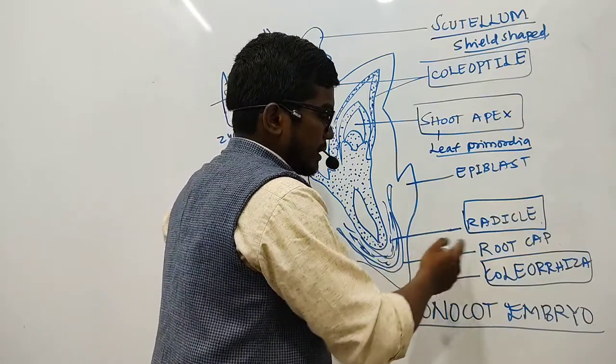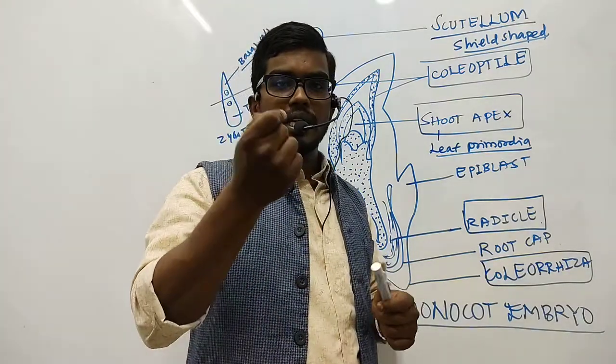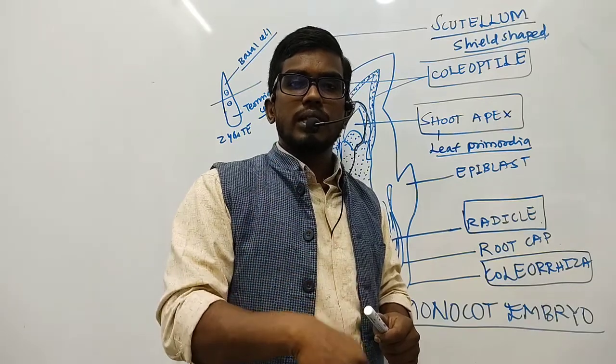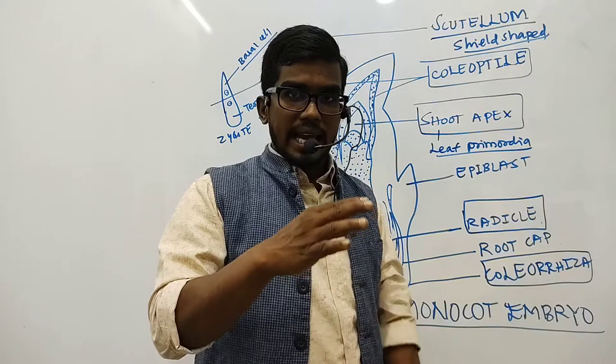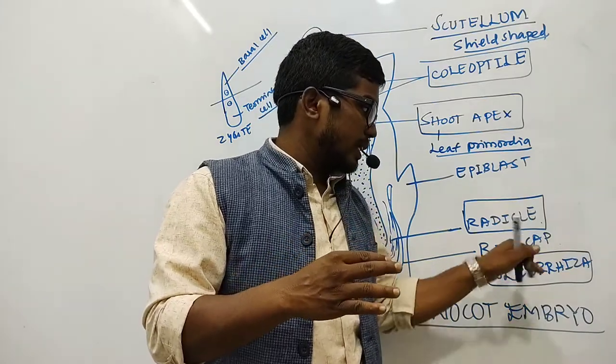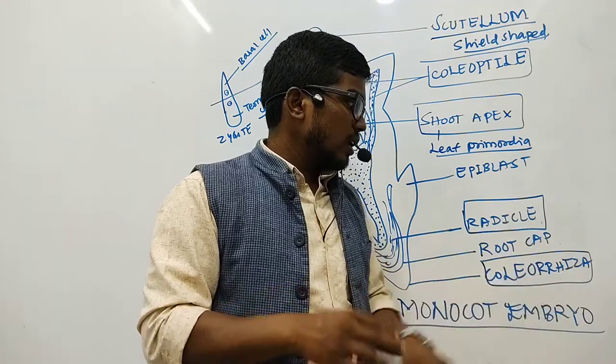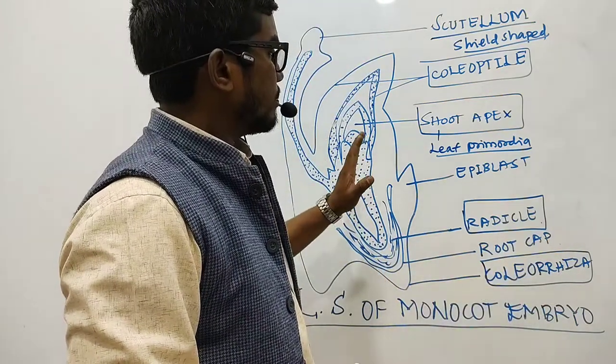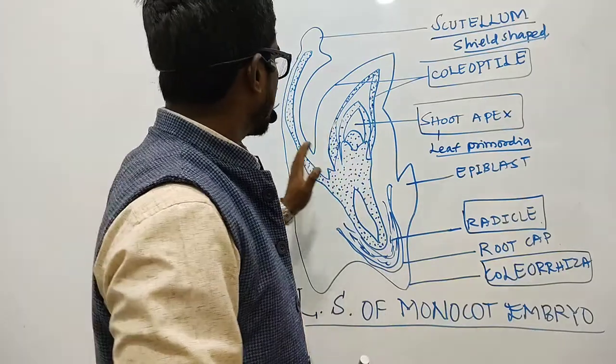The root cap is a thimble-like structure, cap-like structure, which protects the root against damage when it moves deep inside the soil and gets firmly attached. During that time, protection is given by the root cap to the radicle. In fact, both are covered by a structure called coleorhiza. So these are some important points we need to remember with respect to the development of monocot embryo.